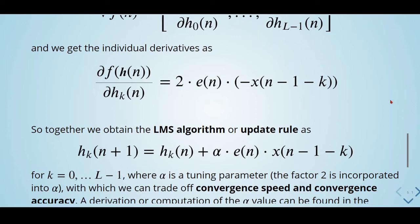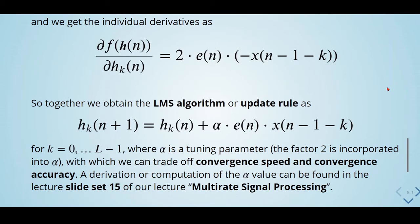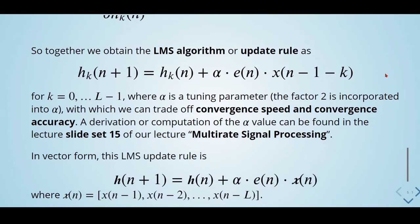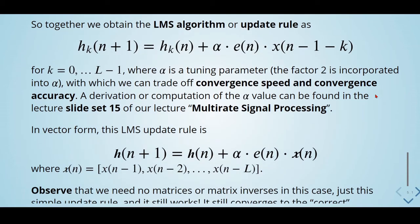And alpha is a tuning parameter. The factor 2 is incorporated into alpha, with which we can trade off convergence speed and convergence accuracy. A derivation or computation of the alpha value can be found in the lecture slide set 15 of our lecture on multirate signal processing.